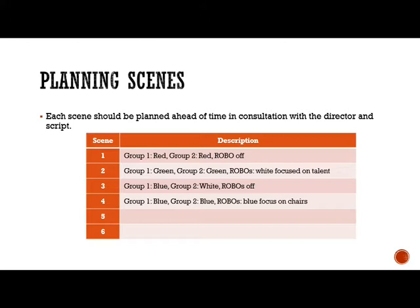We've got a really simple one here. Scene one: group one lights are red, group two lights are red. We have four par lights separated into two groups — left group and right group — and they're both going to be red. Our robo lights, which are our moving headlights, are going to be off.